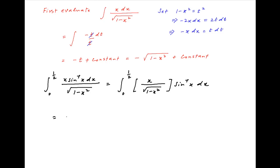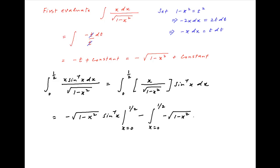The first term is the integral of x upon square root of 1 minus x squared, which equals minus square root of 1 minus x squared, as determined above, multiplied by sin inverse x, evaluated between x equal to 0 and 1/2. Minus the second term: the integral from 0 to 1/2 of minus square root of 1 minus x squared times the derivative of sin inverse x, which is 1 upon square root of 1 minus x squared.